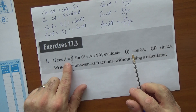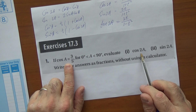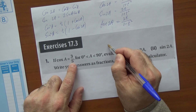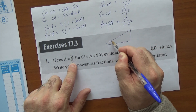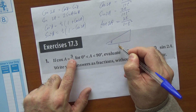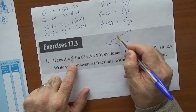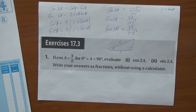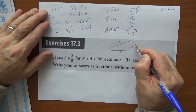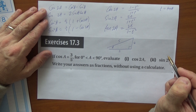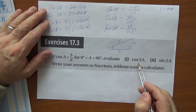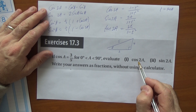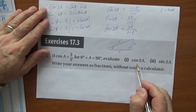I'd implore you to draw a reference triangle with angle a, adjacent of 3, and hypotenuse of 5. Pythagoras tells us the opposite is 4. There are two ways to do this — write your answer in fraction form and we'll do both methods.